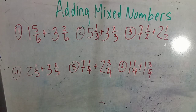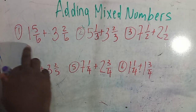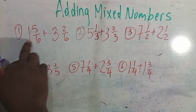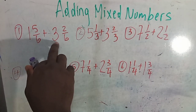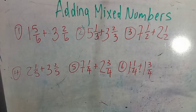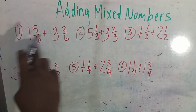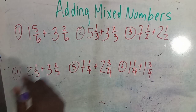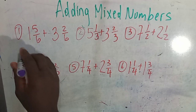Adding mixed numbers. 1 and 5/6 plus 3 and 2/6. What you need to do when you're adding mixed numbers is to first separate all numbers.